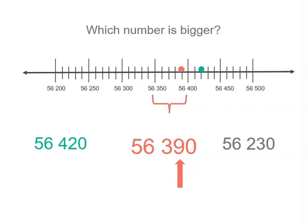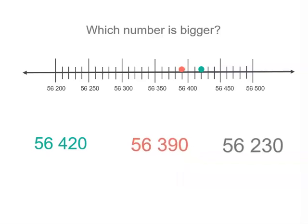You could also have started at 56,400 and then gone backwards by 10. 56,230, well that's between 56,200 and 56,300. So we put our dot at 56,200 and we've got a 3 in the tens place. So it's going to go across three ticks, and that's where 56,230 would be.